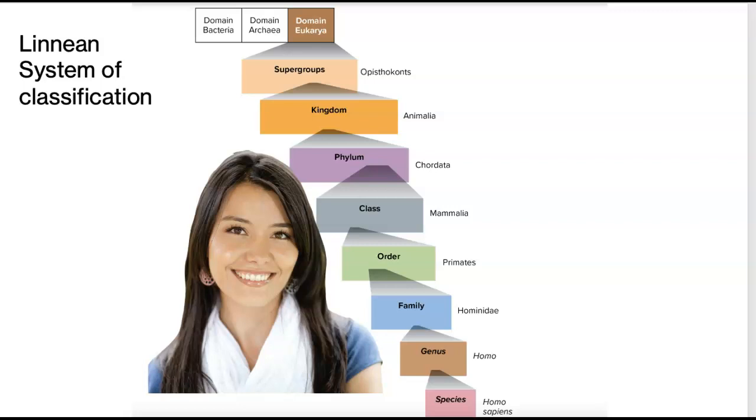But what we do with classification is when we have an animal, we start at the top and say, all right, it has to go in this level of classification called domain. Now domain is big, broad, very generalized. Currently, we recognize three domains of life. Domain bacteria, domain archaea, and domain eukarya. That's it.